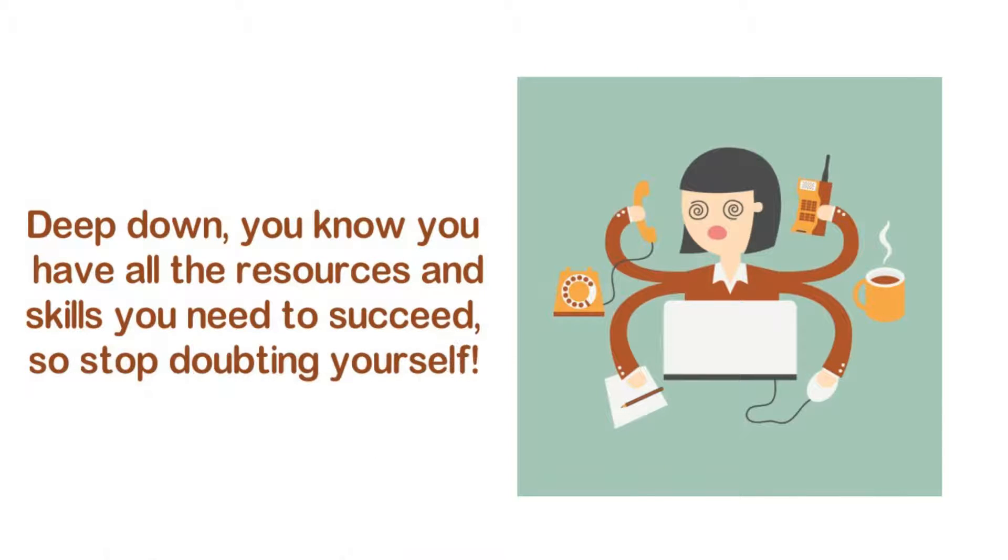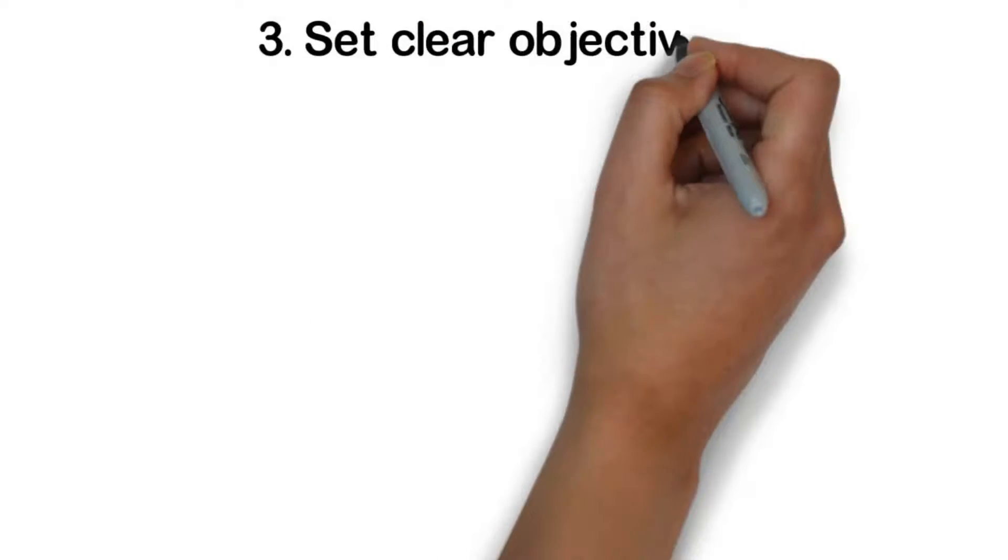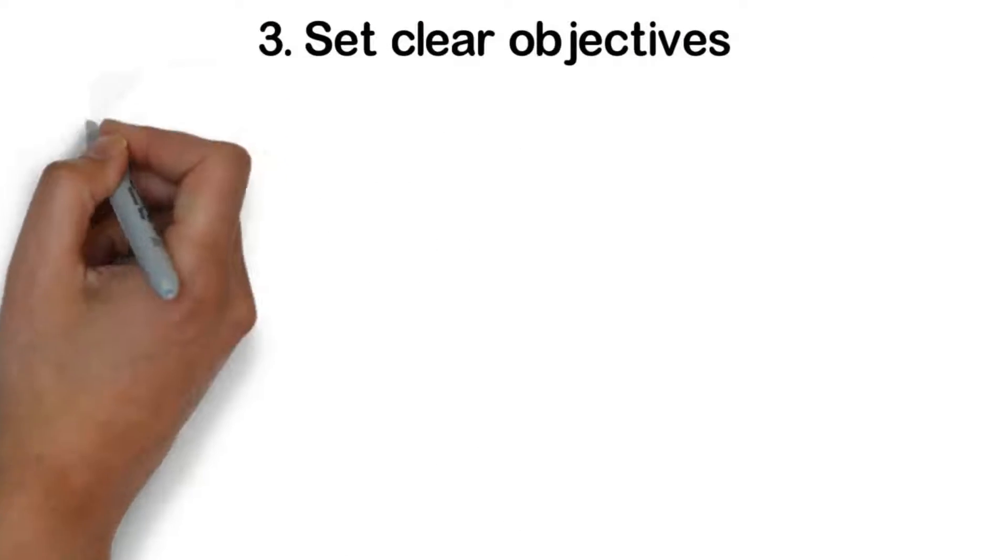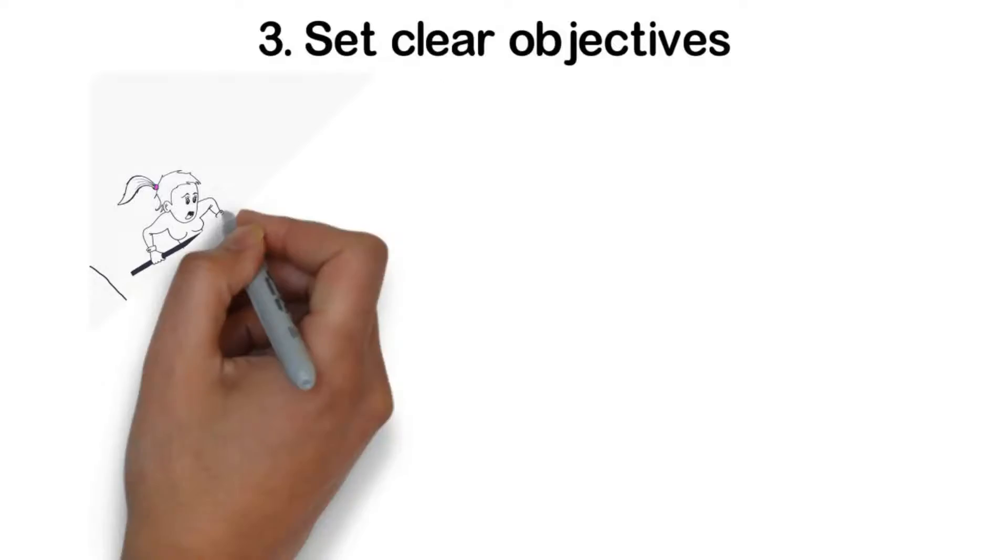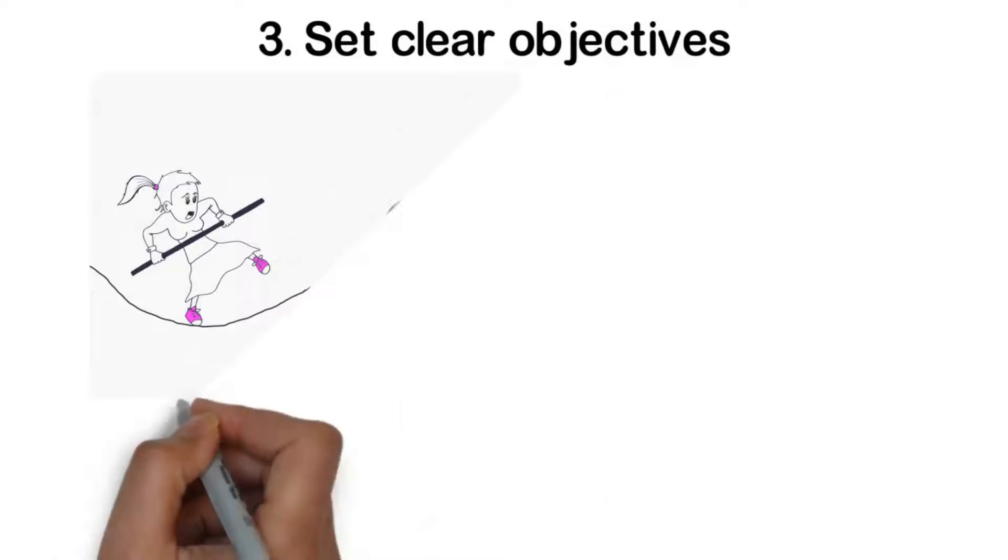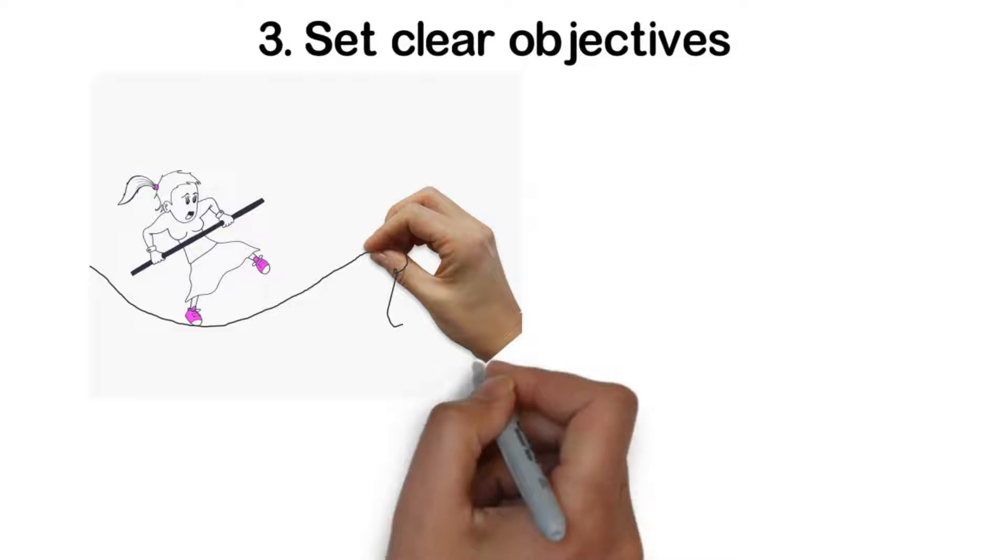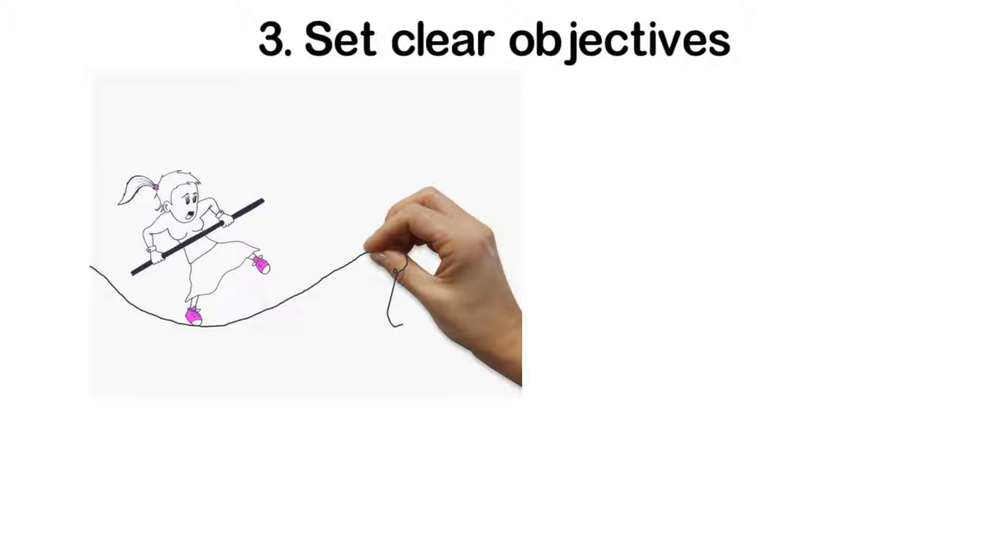Deep down, you know you have all the resources and skills you need to succeed. So stop doubting yourself. Three: set clear objectives. To be successful, it will be very important for you to know the direction in which you are headed. You will need to have clear and precise objectives.